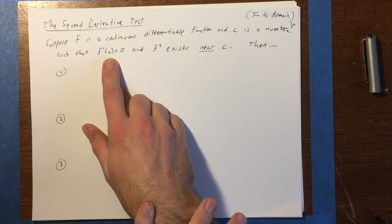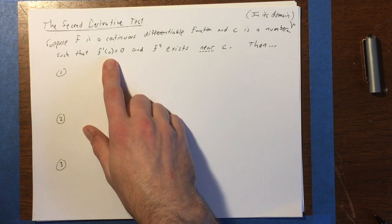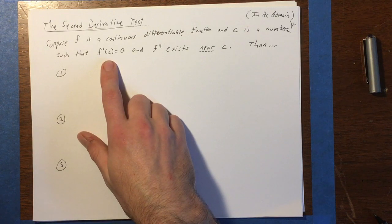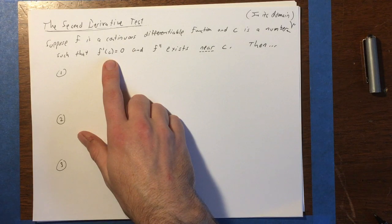If f prime of c is undefined and it's a critical number, it might still be a minimum or a max, but this second derivative test is not going to work. So it's an f prime of c equals zero crit number, and we want to know is that a minimum or a maximum?